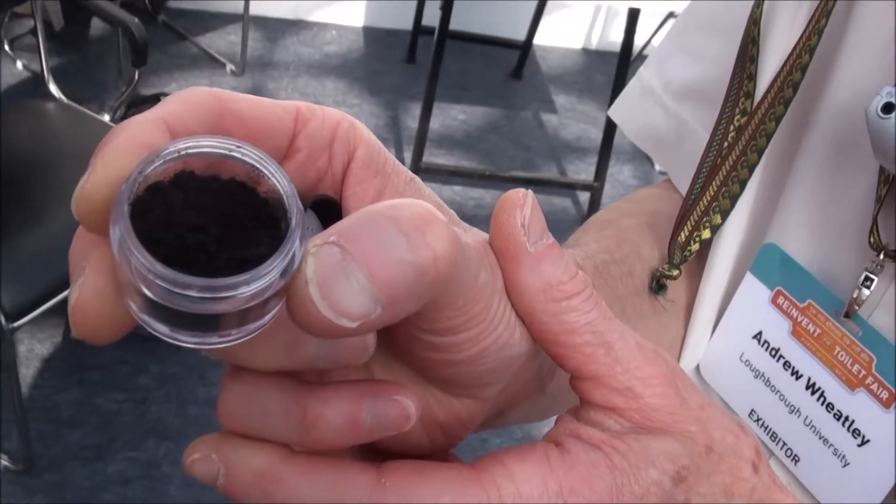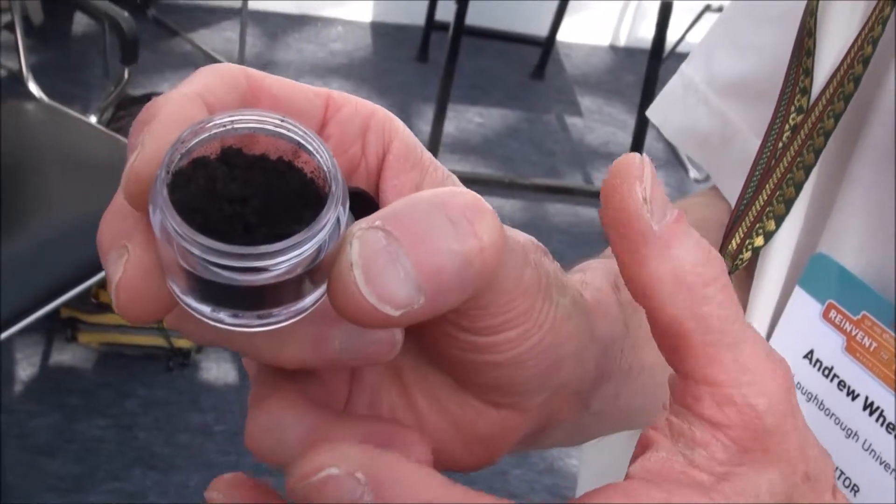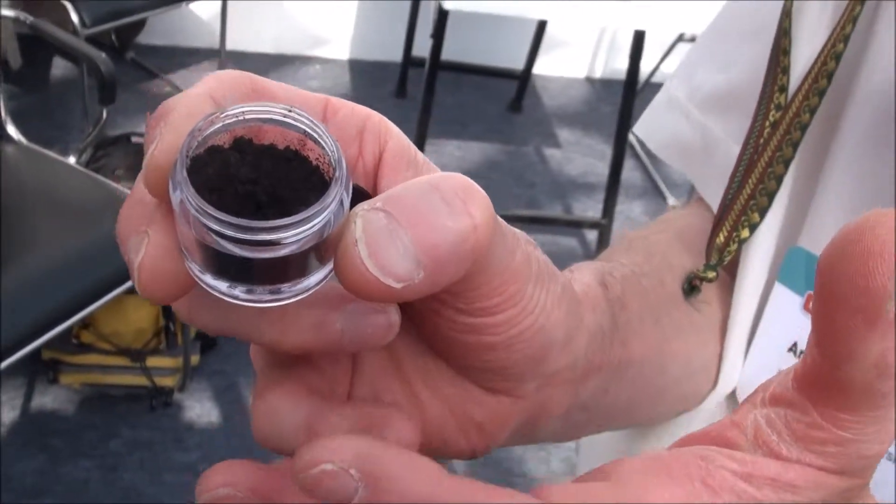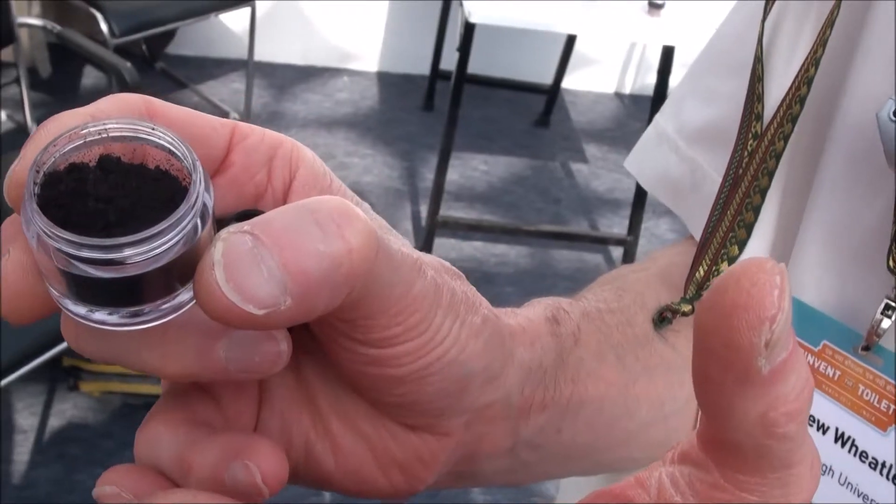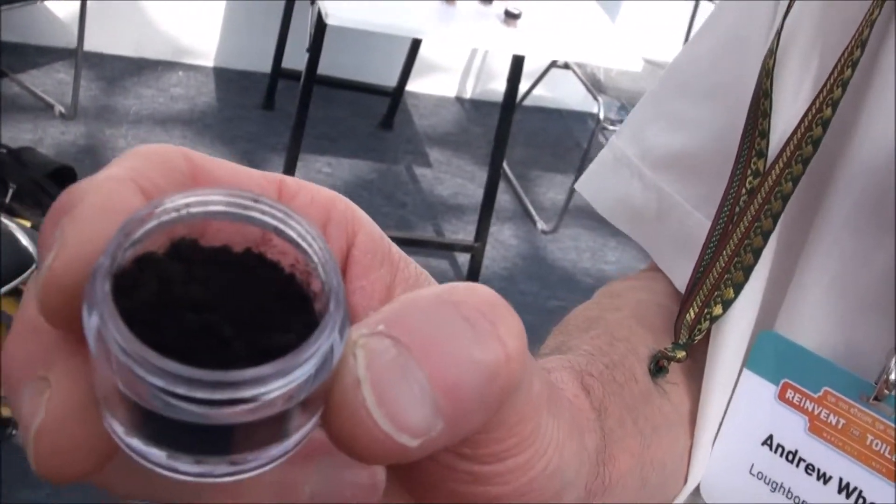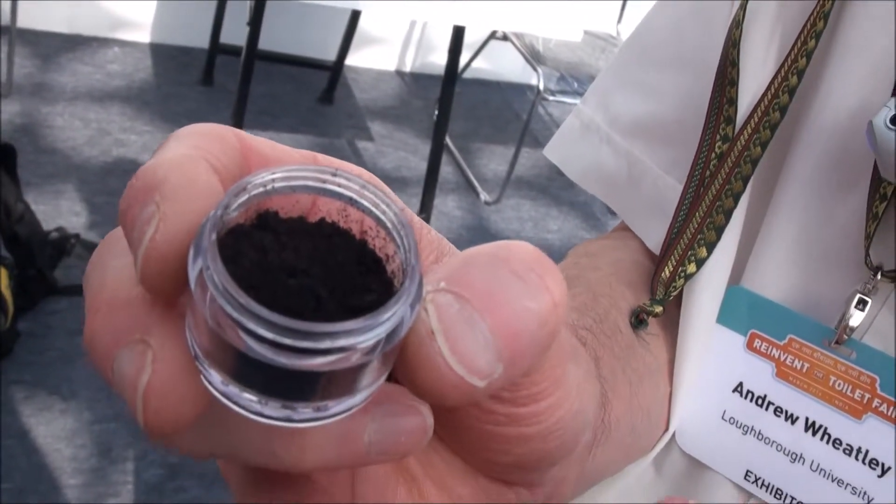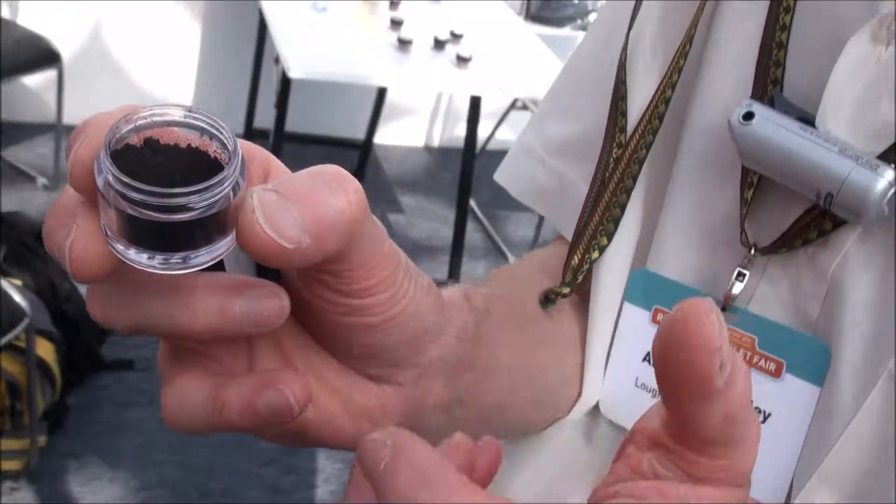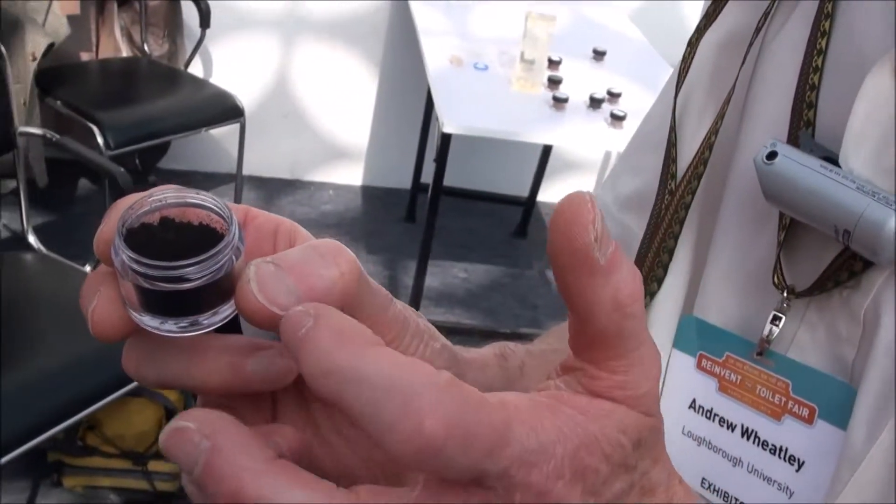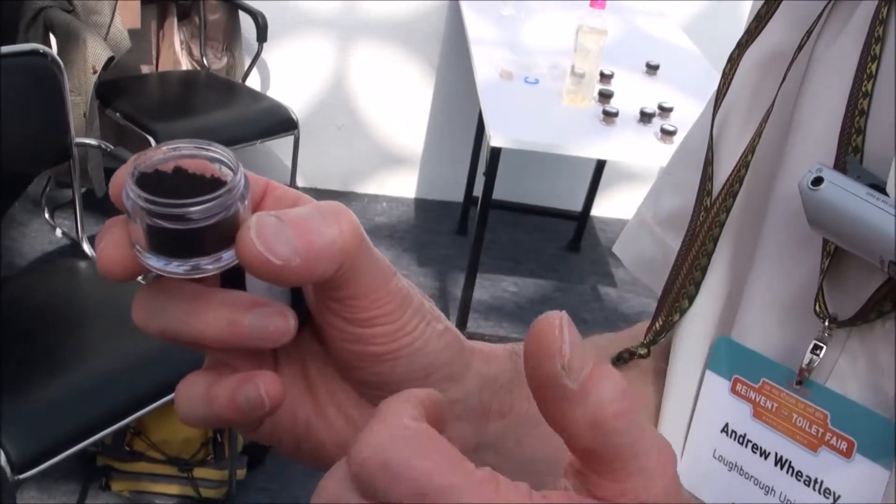So this material is the second product, and this material is suitable either as a bio-coal, some people call it a bio-coal or bio-lignite material, so it has an energy value, but it can also be used as a soil conditioner because all the original phosphorus in the waste is contained in this product. So it's a good compost, a good soil conditioner.